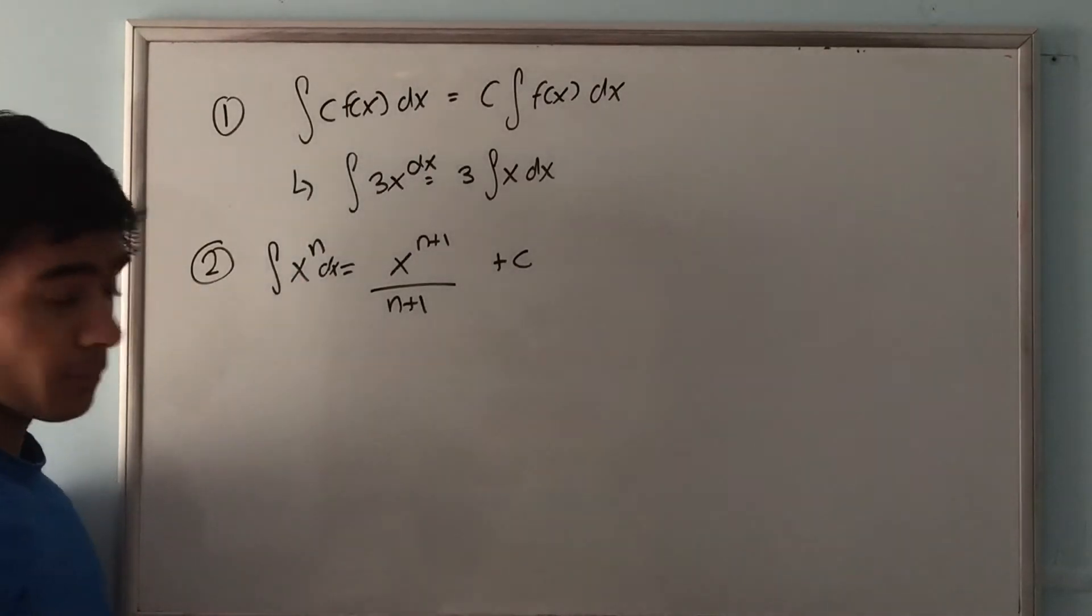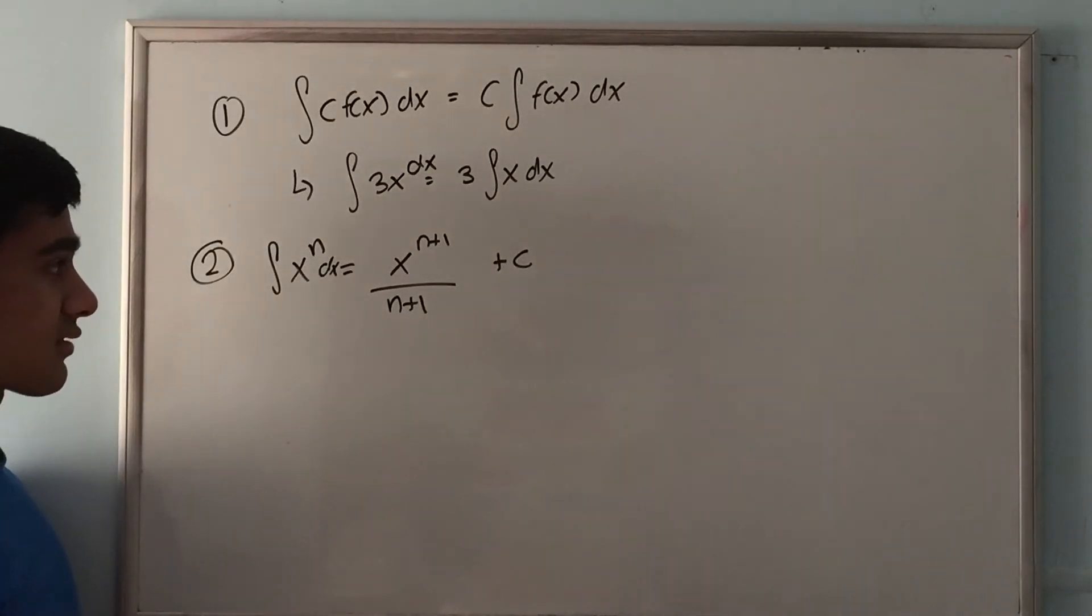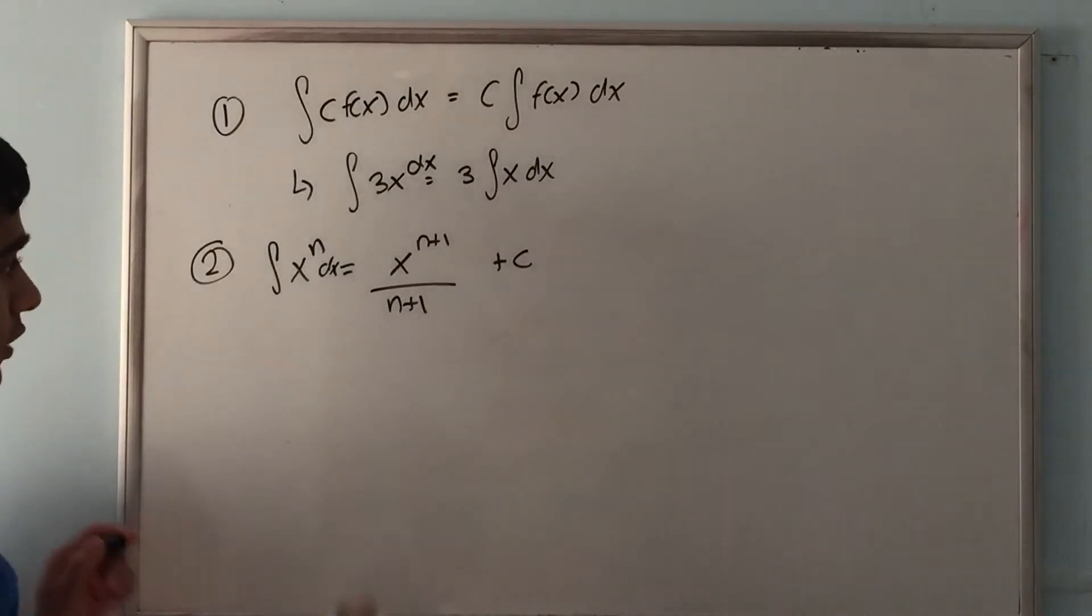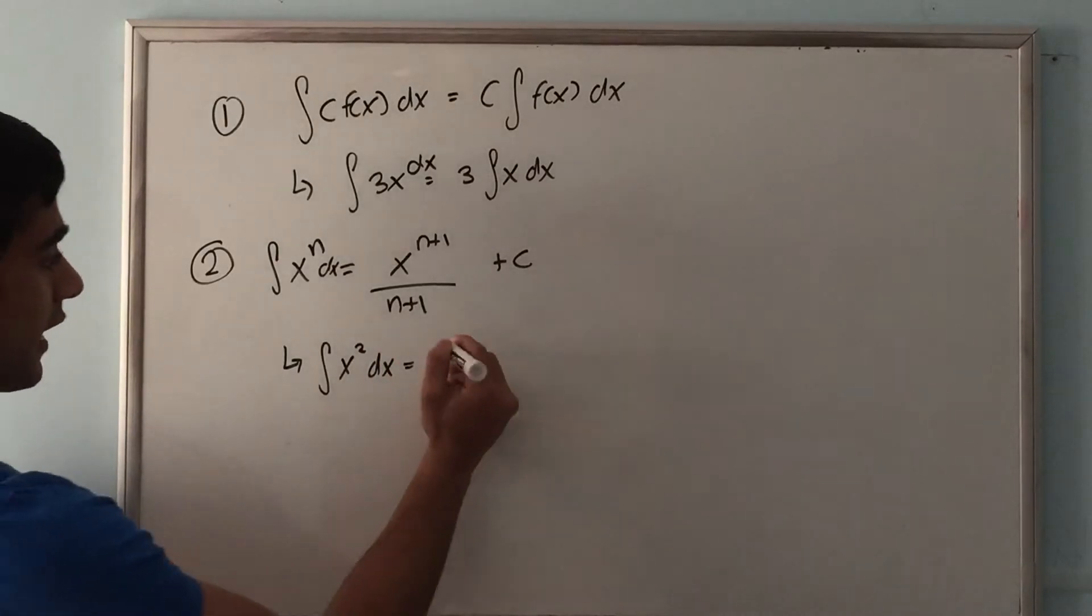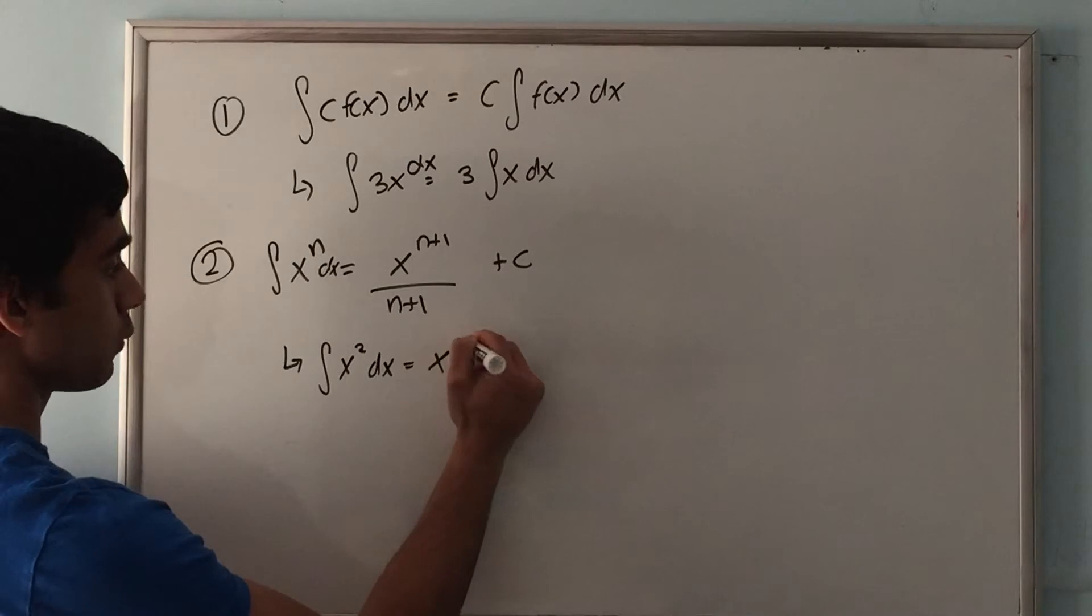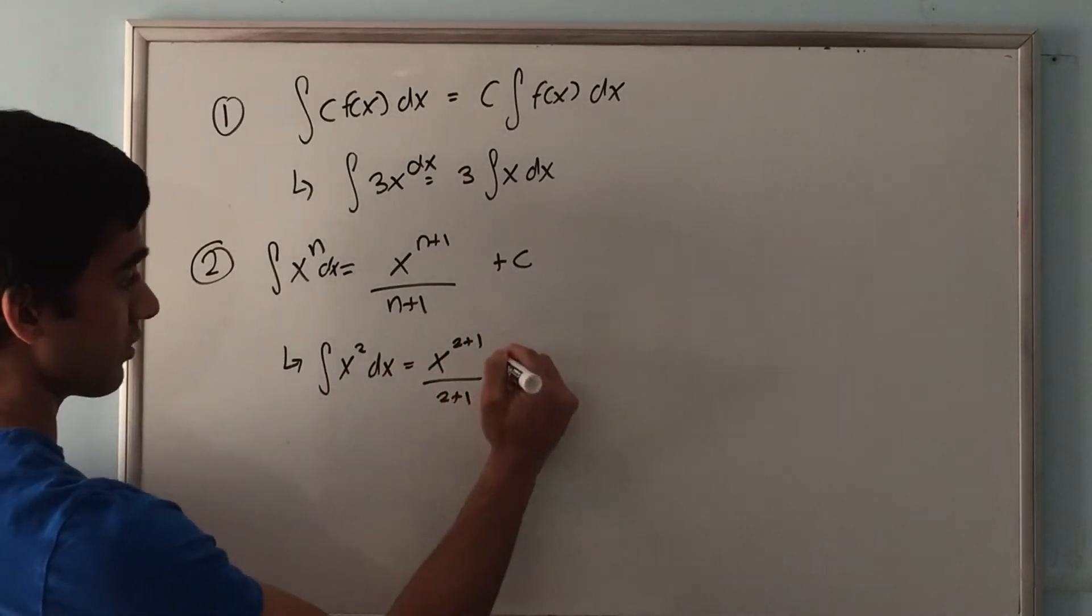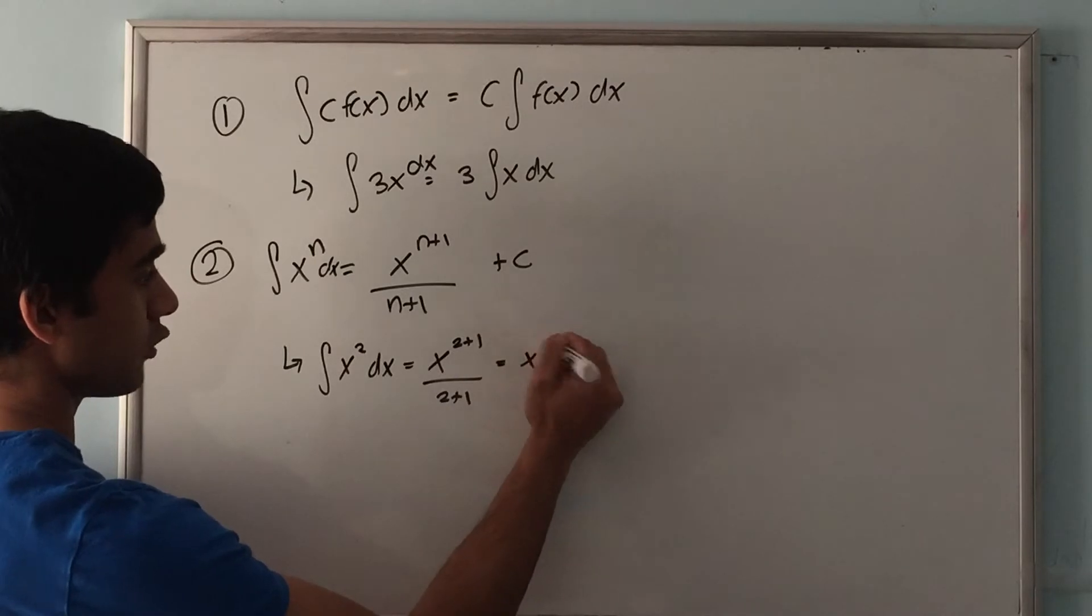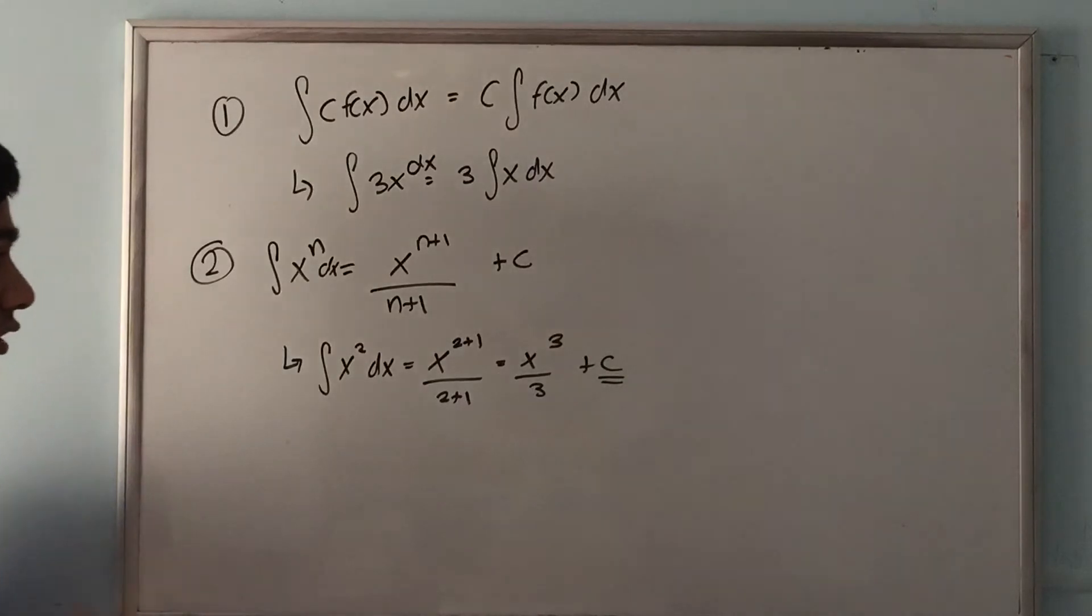Overall the power rule states that the integral of x to the n dx equals x to the n plus 1 over n plus 1. For example, if you want to take the integral of x squared dx, where n equals 2, this means x to the 2 plus 1 all over 2 plus 1. So this equals x cubed over 3 plus c. Remember you can't forget the plus c.